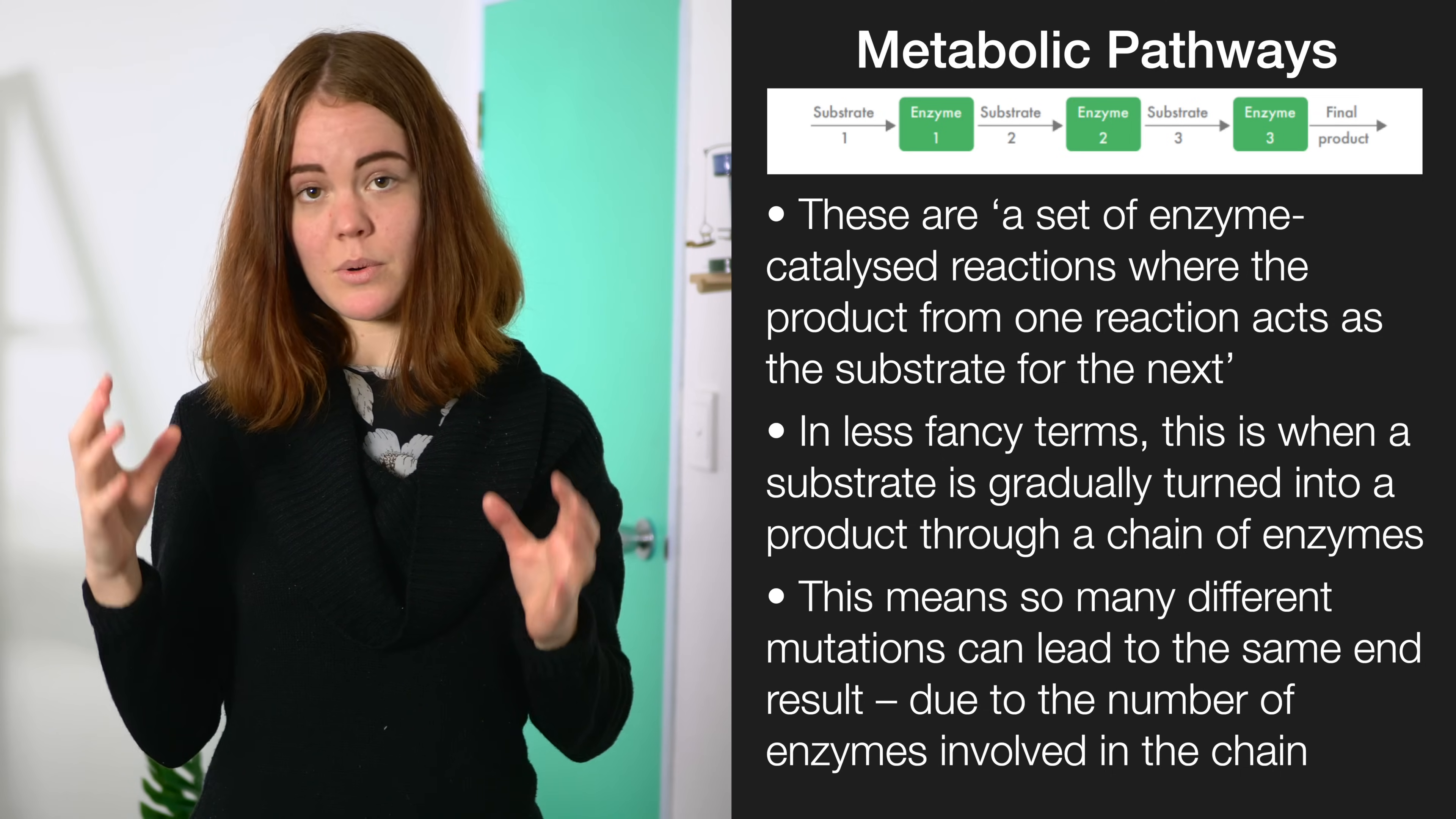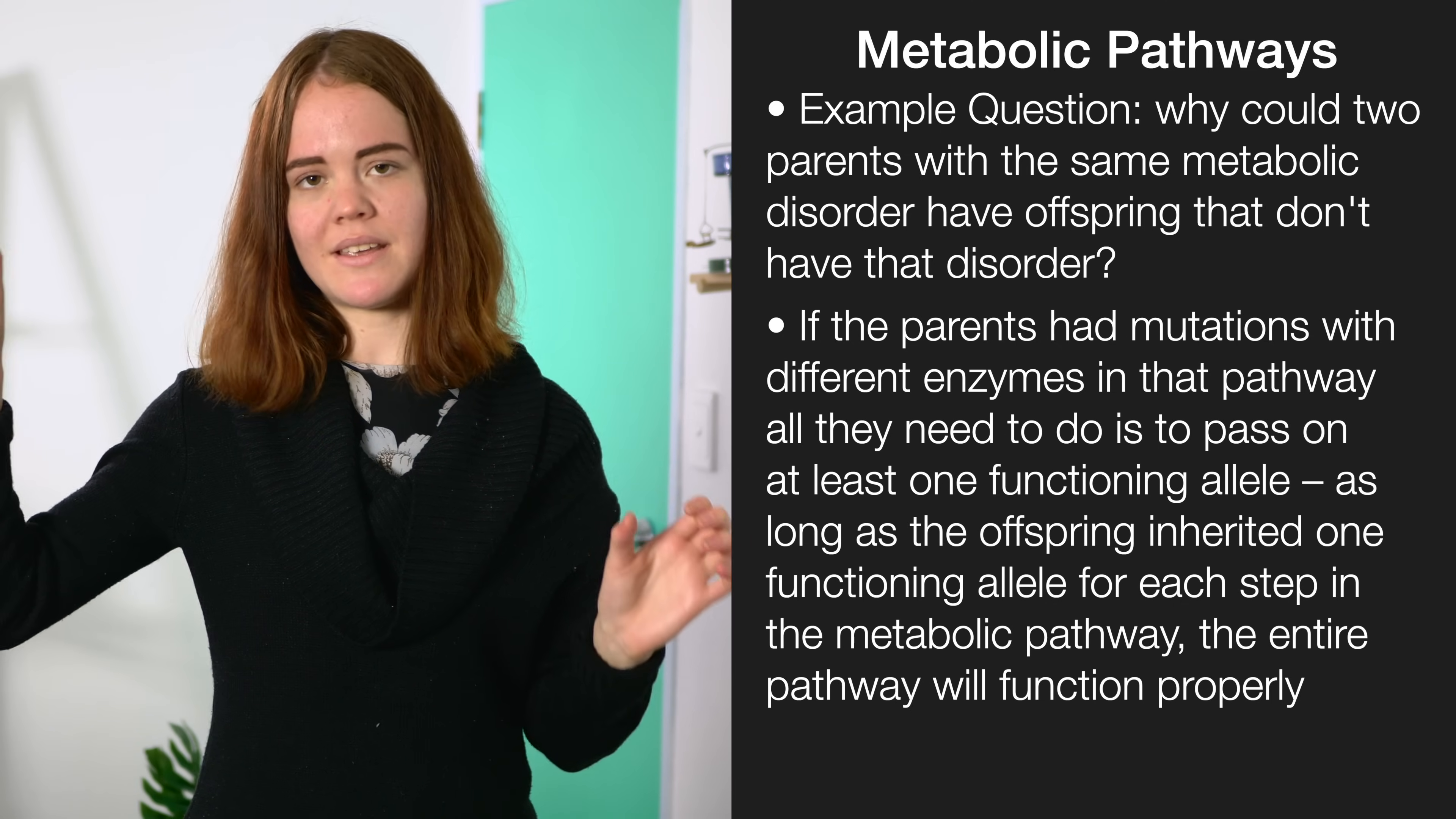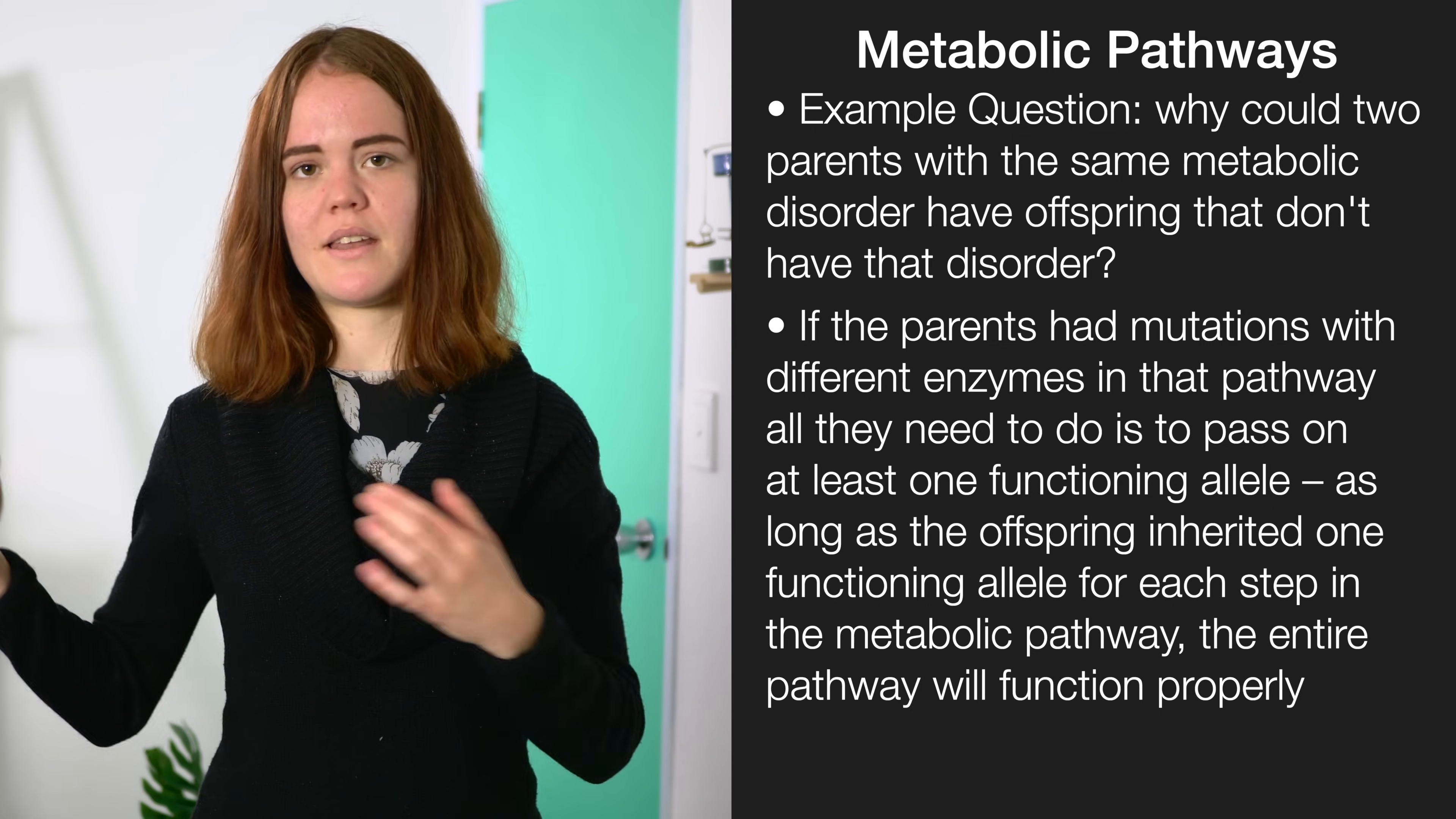A particularly tricky question that they can ask you about metabolic pathways is why two parents could have the same metabolic disorder but have offspring that don't have the disorder. Now this is definitely an excellence portion of a question. The key idea here is that if the two parents have mutations for different enzymes within that pathway, all they need to do is pass on at least one functioning allele for the other bits. So because the offspring has a functioning allele for each step in the metabolic pathway, even if they also have inherited some non-functional ones from the parents, the entire pathway will function in the offspring and the offspring cannot have that disorder.